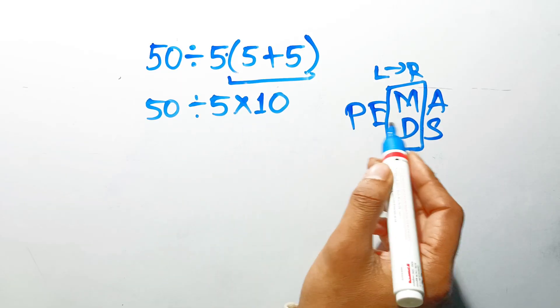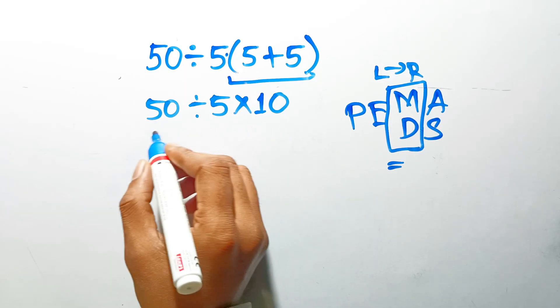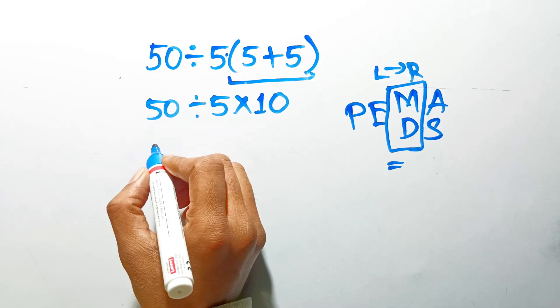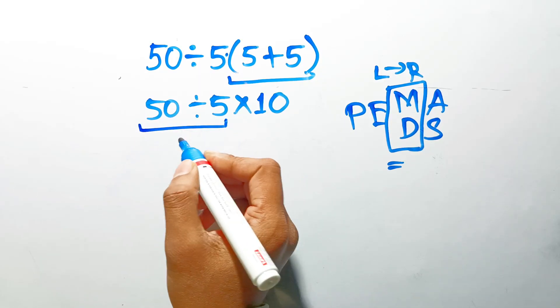Multiplication and division are actually ranked equally, like a tie, so we must solve them in the order they appear from left to right. So here, first we have to do this division because it is on the left side.